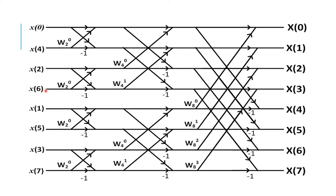For DIT, the twiddle factor has to be multiplied before entering the butterfly structure. Place the twiddle factor W in front of the butterfly structure. W2 to the power of 0 can be taken as W8 to the power of 0 using the periodicity property. W4 to the power of 0 is replaced by W8 to the power of 0, and W4 to the power of 1 becomes W8 to the power of 2 by multiplying by 2 due to periodicity.